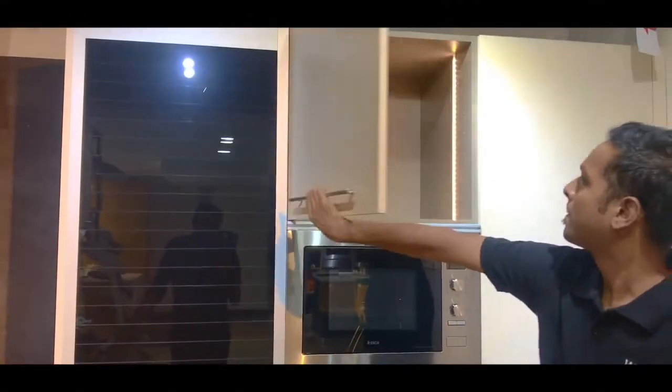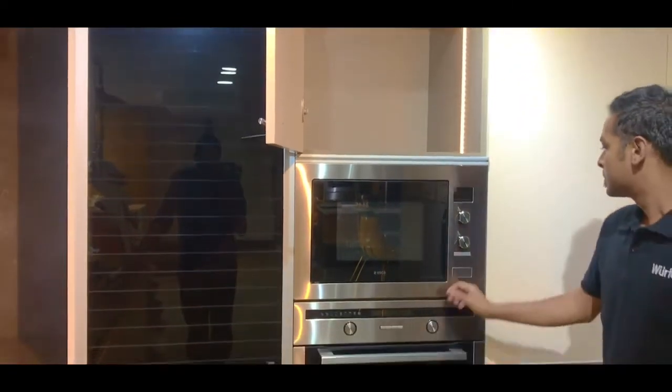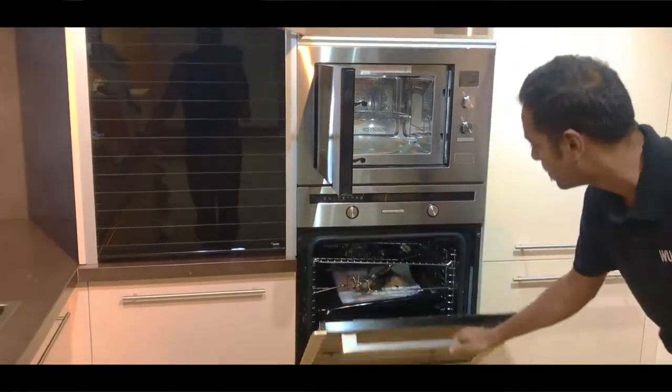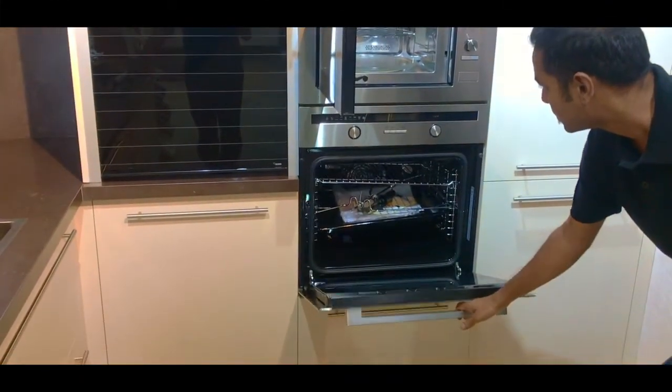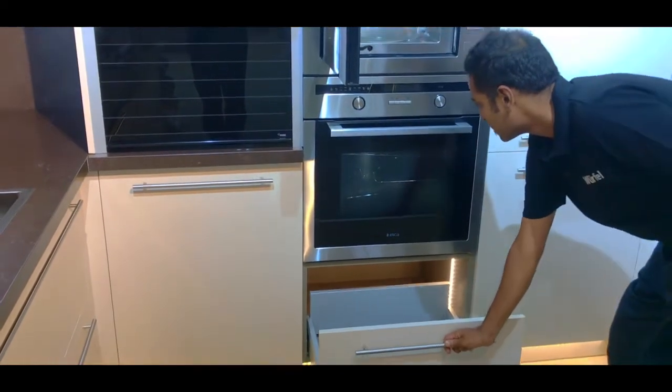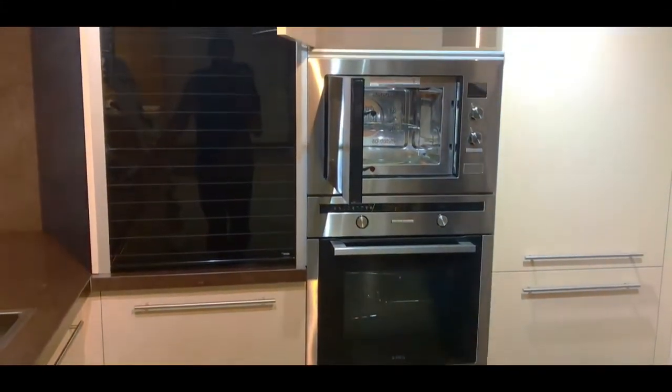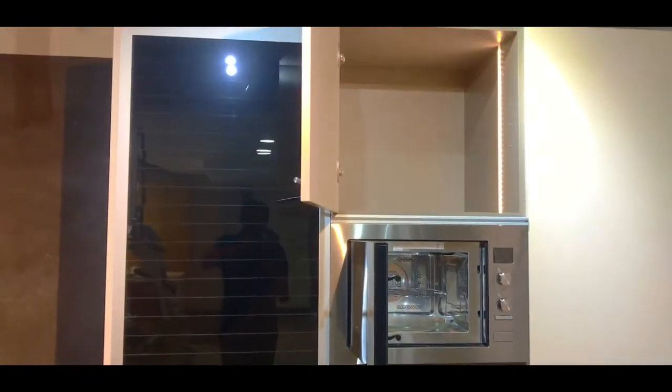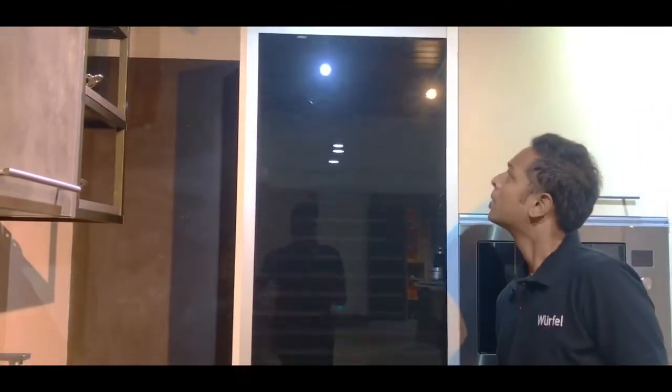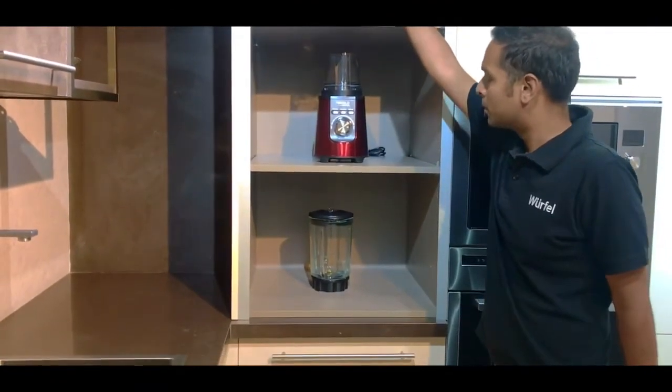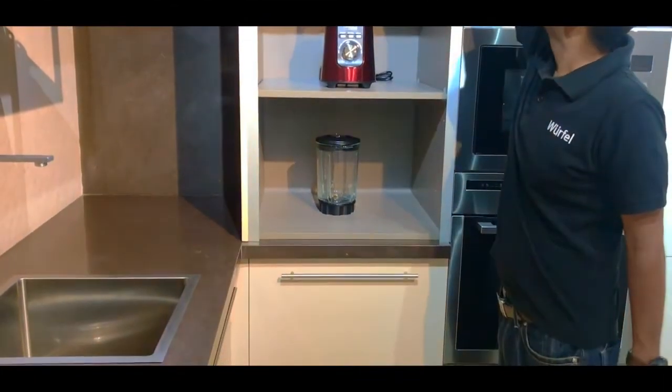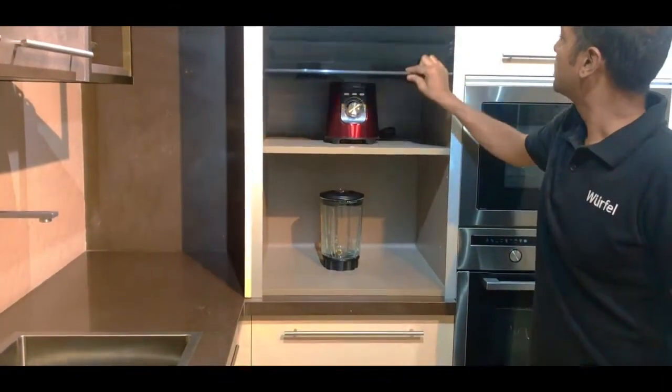The next tower unit has a hinge door at the top, it also has a microwave and an oven in the middle and down at the bottom it has a drawer. The last tower unit in the l-shaped kitchen features a rolling shutter with adjustable shelves on the inside and just below that you have access to the corner space.